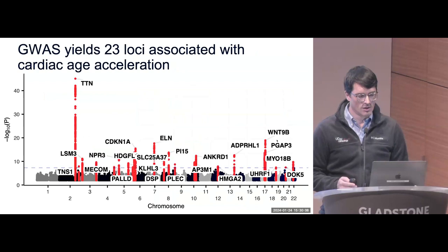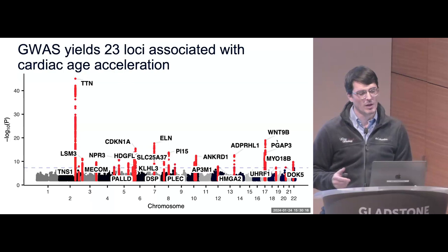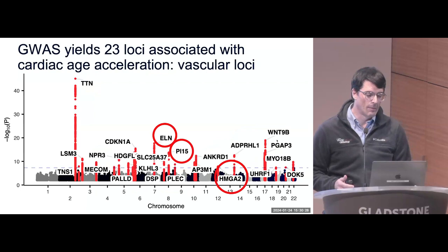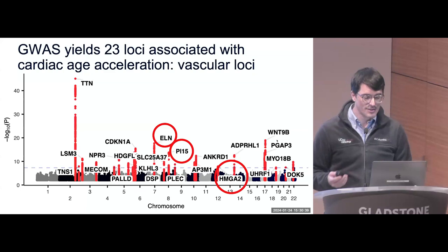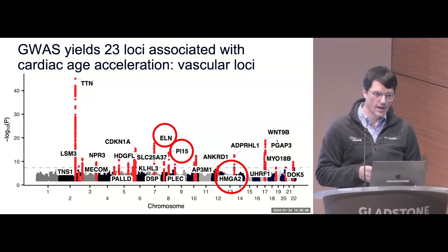As a common variant geneticist, the whole point for me was to conduct a GWAS. We identify 23 loci — eight of them, and probably more, are certainly associated with either left ventricular or left atrial structure and function. We see known genes like titin, desmoplakin, and NPR3 — the natriuretic peptide clearance receptor. Moving to vascular loci, elastin is the top hit, which makes sense since 40% of the bulk mass of the aorta is elastin. So we're certainly picking up cardiac and vascular loci.